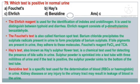Question number 79. Which test is positive in normal urine? The answer is option C: Ehrlich test. The Ehrlich reagent is used for the identification of indole and urobilinogen. It is used to distinguish between typhoid and diarrhea. Ehrlich reagent consists of paradimethylaminobenzaldehyde. The Fauci test is also called Harrison's spot test. Barium chloride precipitates the sulfate radicals present in urine to form a precipitate of barium sulfate. If bile pigments are present in urine, they adhere to these molecules. Fauci reagent contains ferric chloride and trichloroacetic acid.